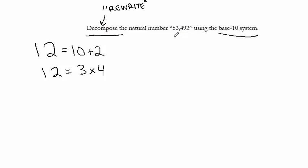Great. So let's take a look at this number, this larger number 53,492. Does that equal 5 plus 3 plus 4 plus 9 plus 2? Of course not. Does it equal 5 times 3 times 4 times 9 times 2? No, neither of those things are true.